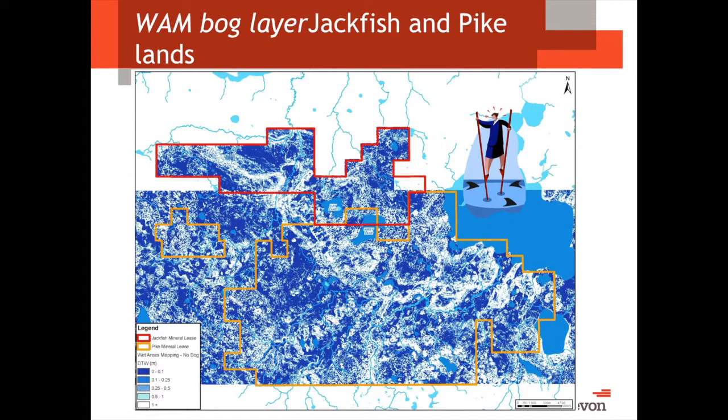When you go to the bog layer, even more. The solid blue areas that filled in from the predicted flow lines — those generally would be fens, and some of them rich fens.